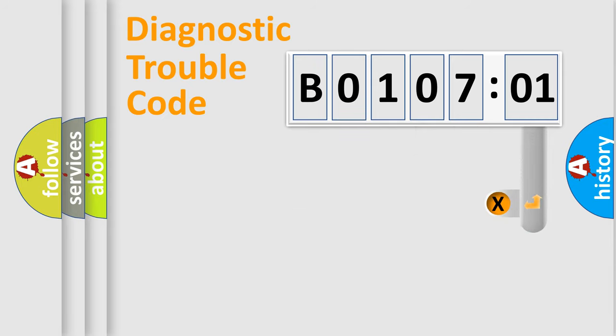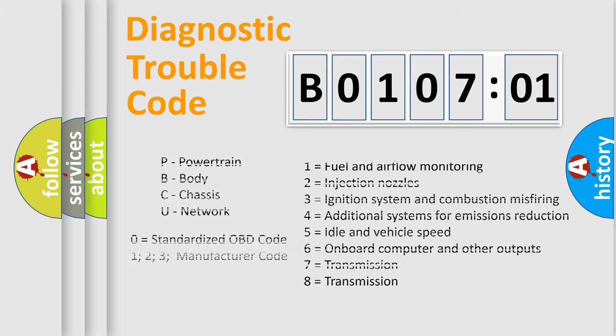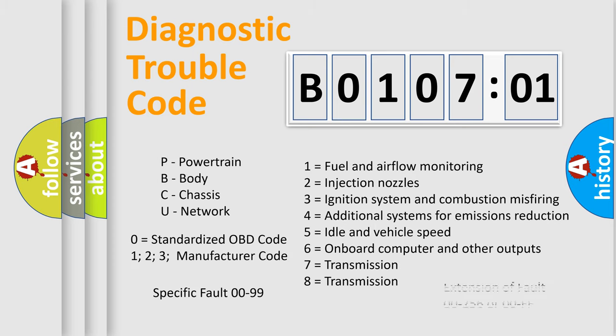The add-on to the error code serves to specify the status in more detail. For example, short to ground. Let's not forget that such a division is valid only if the second character code is expressed by the number zero.